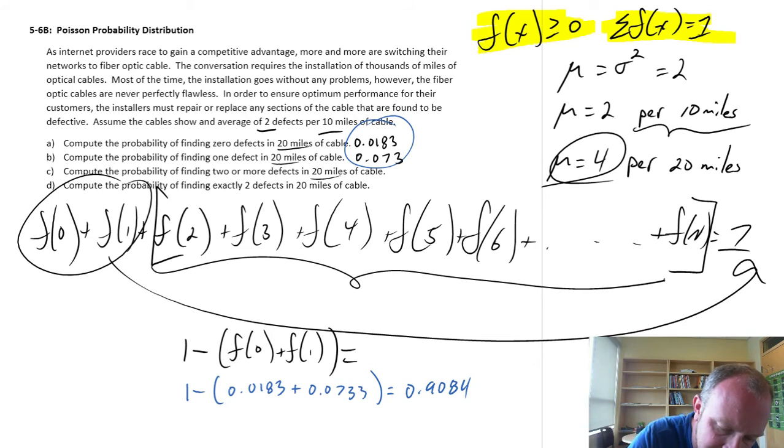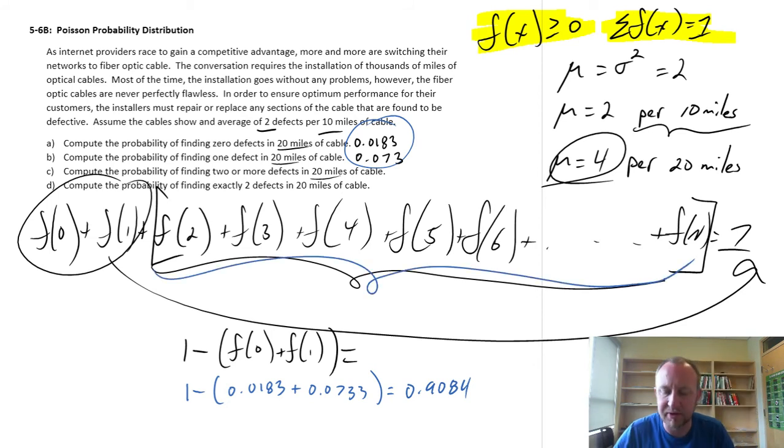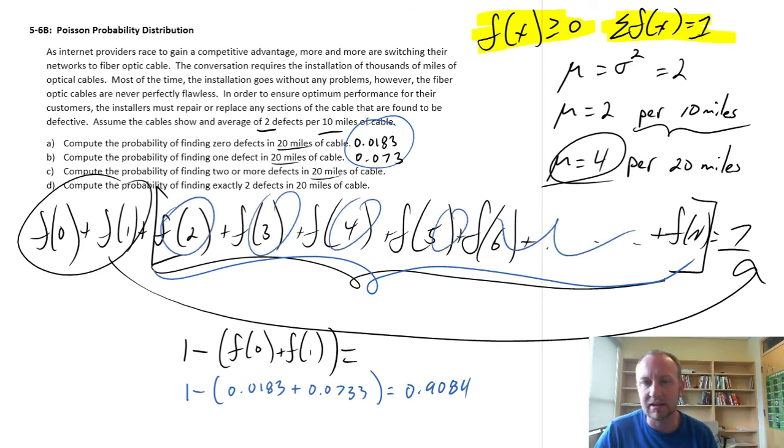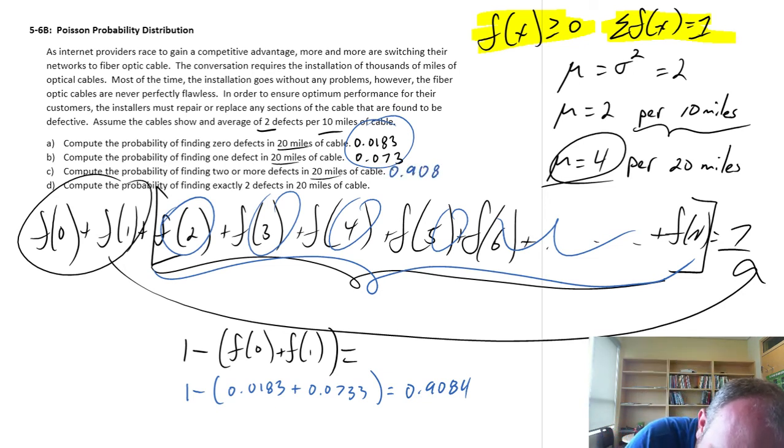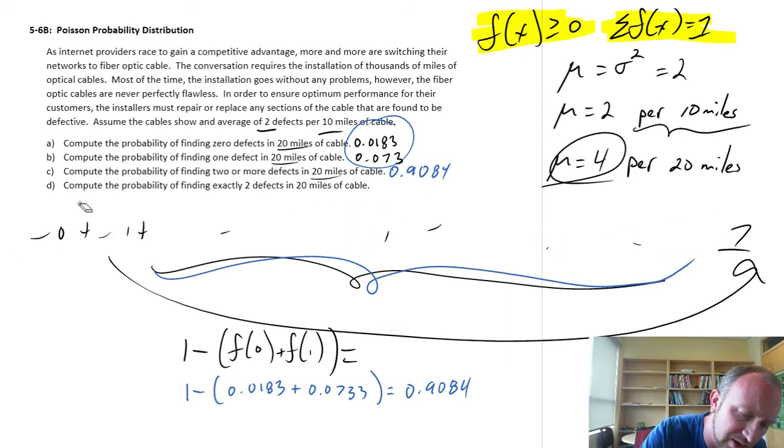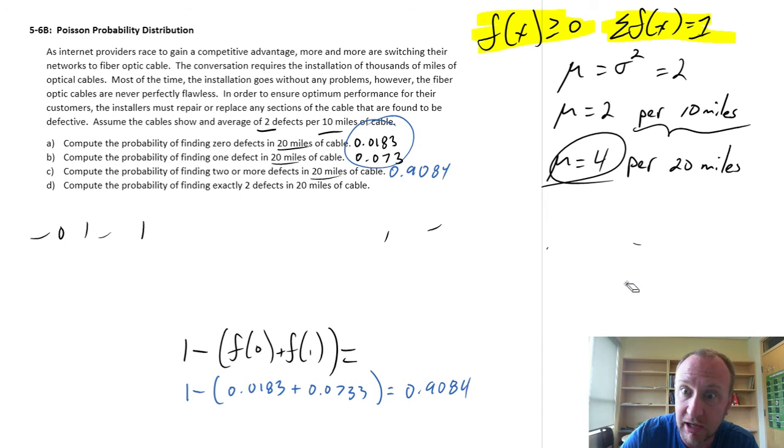So that would be this, all of these probabilities added together. So the probability of 2 or more. So any of these added together. So there's about a 90% chance that we will see 2 or more defects per 20 miles of cable. Okay, so that's good. That was simple enough, I hope. If not, you can always rewind it and watch it again and again and again.